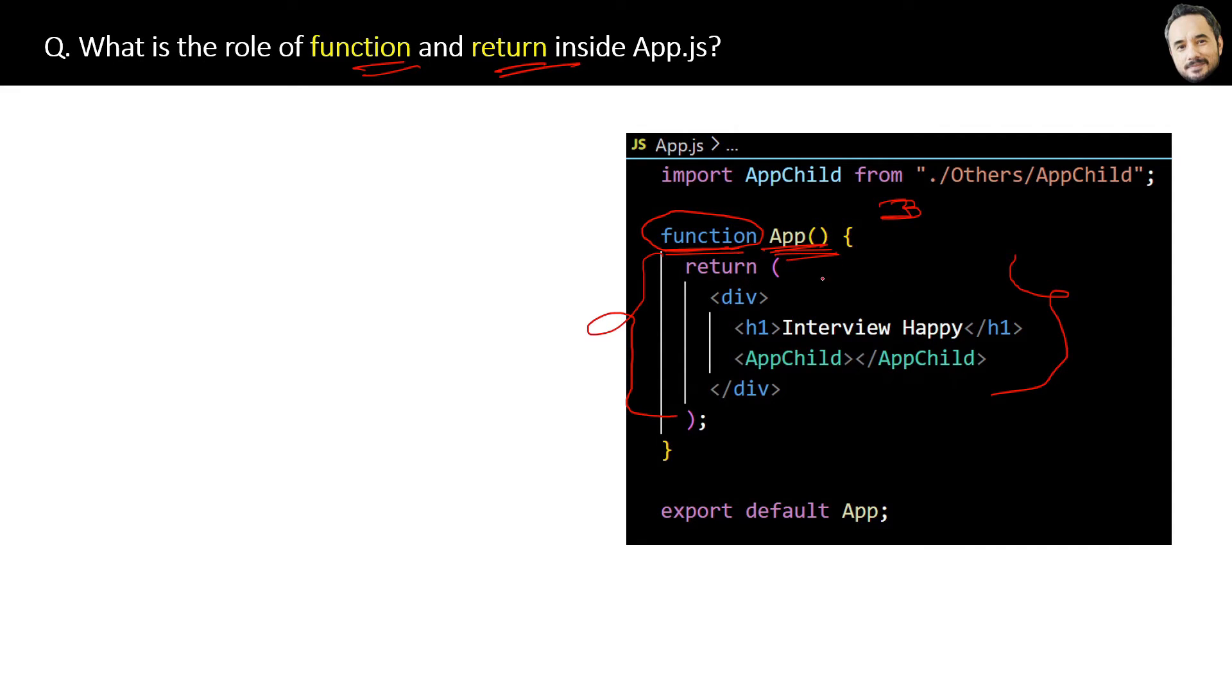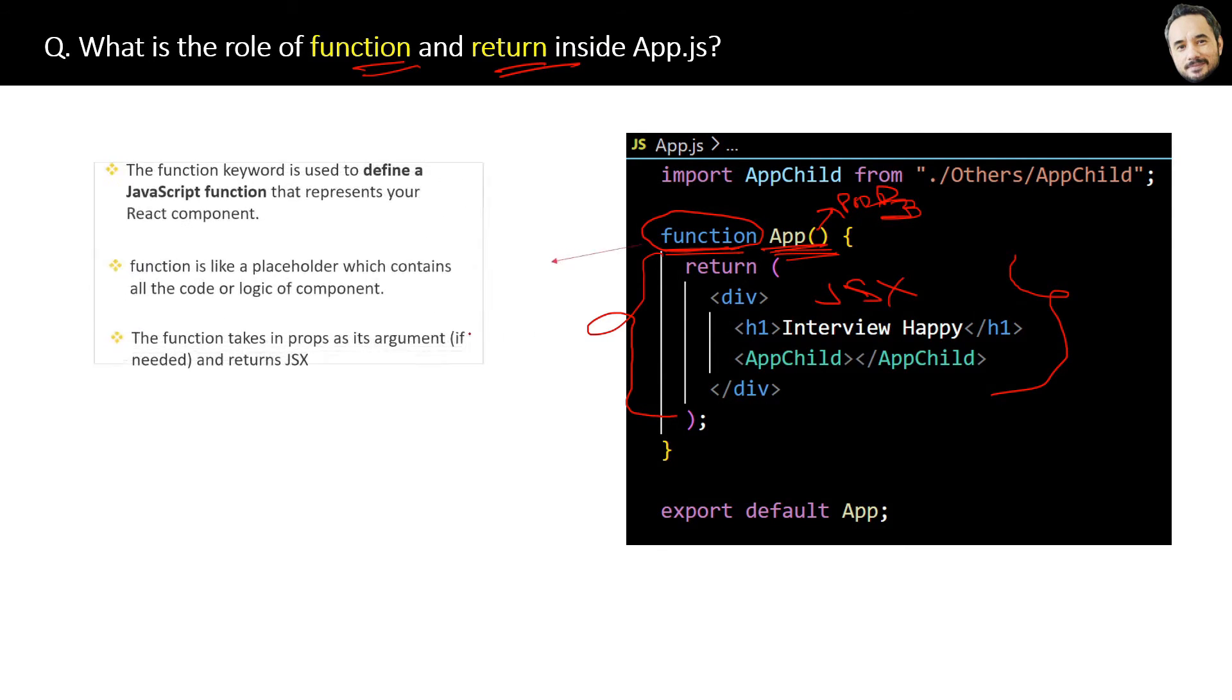Last point is, the function takes in props as its arguments and returns JSX. All points are written here for later reference.